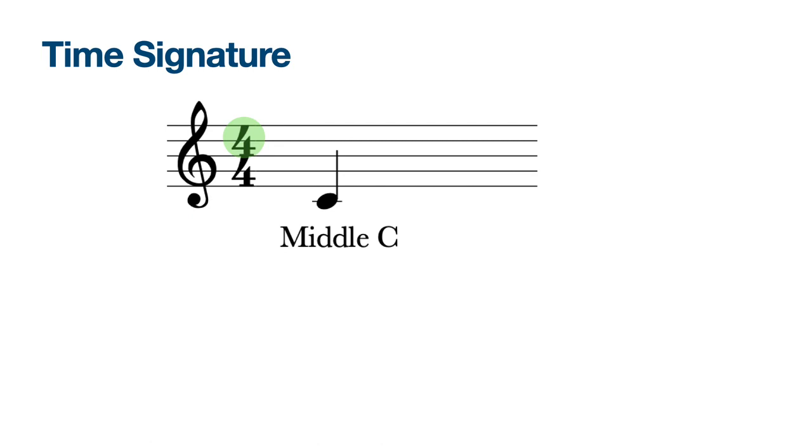Next to the clef you can see two numbers. These numbers indicate the time, the pulse of the music. The top number tells us how many beats are in each bar, in this case four beats. So that will be one, two, three, four, one, two, three, four. The lower number tells us we are counting in crotchets. More about that later but each note you see is a crotchet worth one beat.